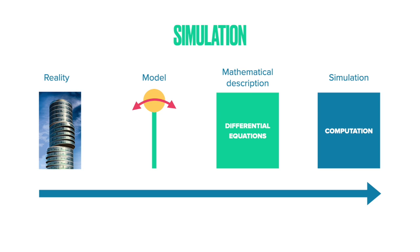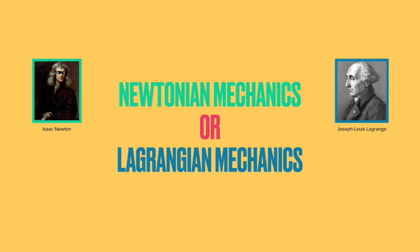This lecture will focus on how we can mathematically describe the dynamical behavior of any structure. We can characterize the dynamical behavior of such physical structures using two methods: Newtonian mechanics or Lagrangian mechanics.